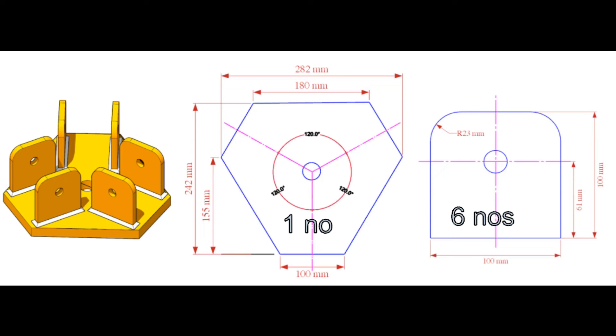The thickness of the bearing plate is 20 mm. The hole diameter is 28 mm. The thickness of the rib plates are 8 mm. The hole diameter on the rib is 15 mm.